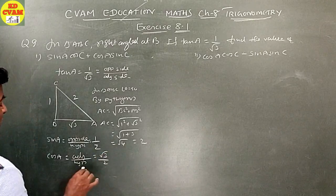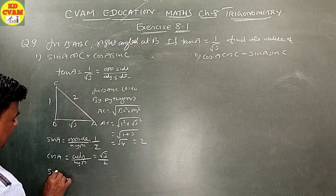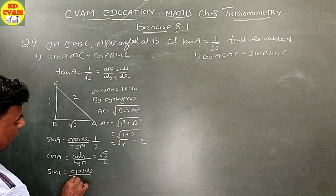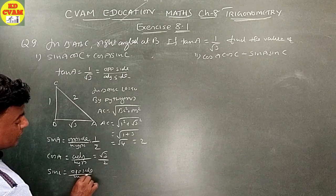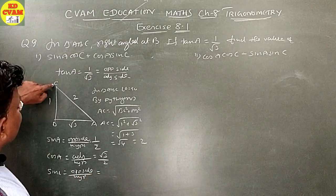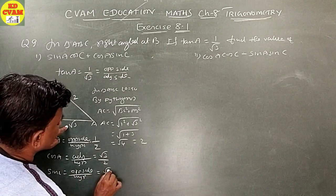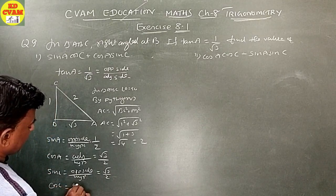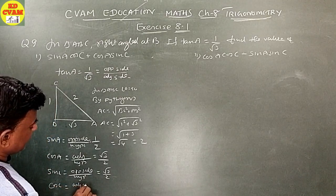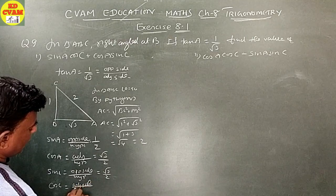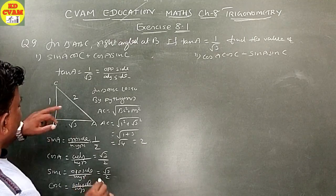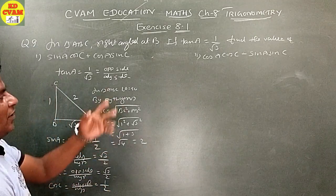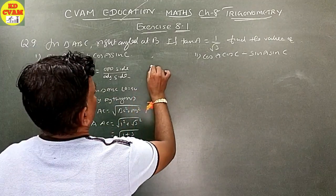Similarly, sin C equals opposite side upon hypotenuse, which equals root 3 upon 2. Cos C equals adjacent side upon hypotenuse, which equals 1 upon 2.